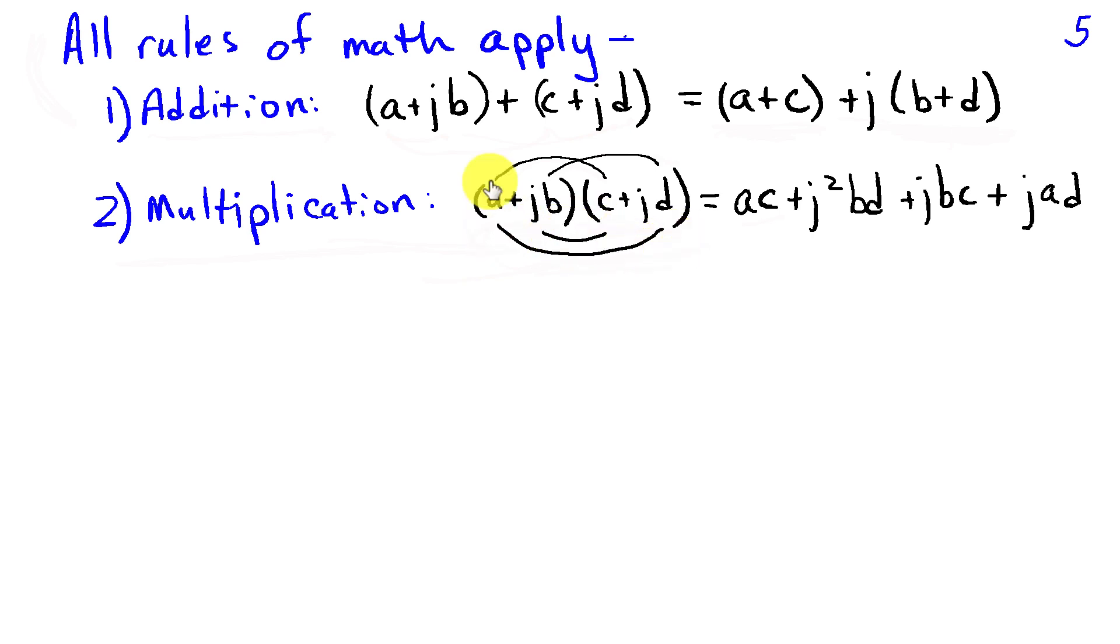I have (a + jb)(c + jd). I'm going to have to multiply a times c, that gives me ac. Then I'm going to multiply jb times jd, that gives me j²bd. Then I'm going to have jb times c, that's jbc. And then I'll have a times jd. We can use the fact that j² = -1 to rewrite this as ac - bd + j(bc + ad). The real part is ac - bd. The imaginary part is bc + ad.